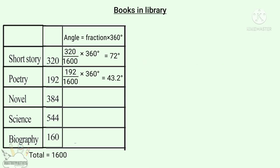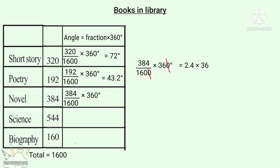Now we have the Poetry angle. This is the angle of Novel. The total is 1,600 books — that is 384 books. So the fraction is 384 by 1,600. So the angle is 384 by 1,600 into 360 degrees. The zeros cancel. 384 by 160 is 2.4. So this becomes 2.4 into 36 degrees, that is 86.4 degrees.